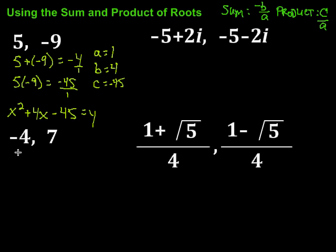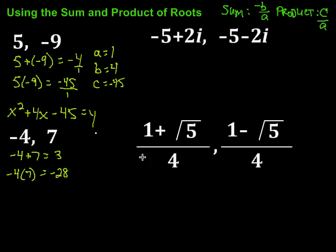Let's take a look at the next one. We have negative 4 and 7 as our roots. First we take the sum: negative 4 plus 7 equals 3. Then we take the product: negative 4 times 7, which is negative 28. Since they're not fractions, I'll make them into fractions by putting each over 1, and then I can pick out A, B, and C.